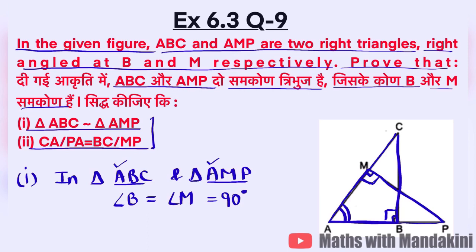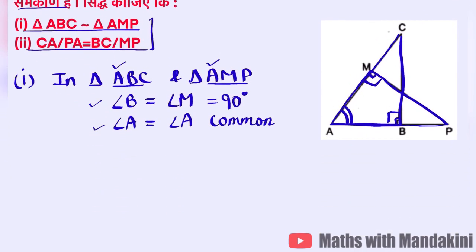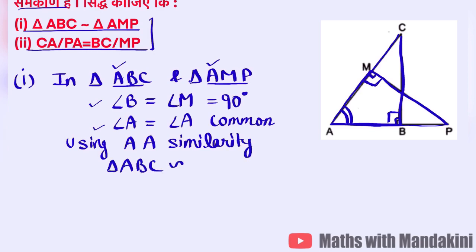Angle A is common to both triangles. So angle A is equal to angle A — it is common. Now in both triangles we have angle B and angle A — that gives us two angles. So using Angle-Angle (AA) similarity, both triangles are similar.